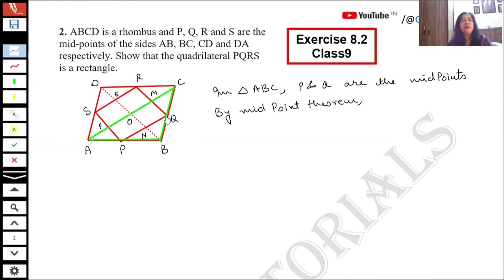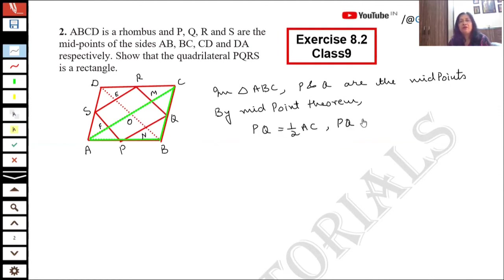The midpoint theorem states that the line joining the midpoints of two sides is parallel to the third side and half of the third side. So the result is: PQ is parallel to AC and PQ is equal to half of AC. This is our first result.